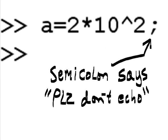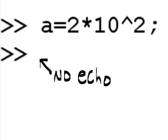The semicolon says please don't echo. And here you see there's no echo. What's in A? A equals 200.